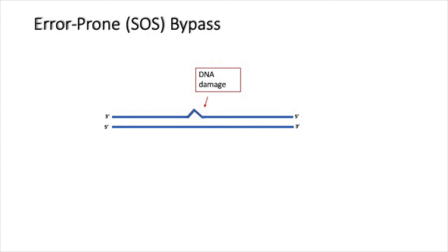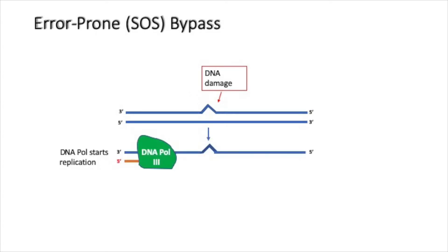This is a double-stranded DNA molecule which carries a damaged region on its template strand. DNA polymerase 3 is the enzyme that is responsible for DNA replication in E. coli. DNA polymerase 3 replicates DNA in a 5' to 3' direction.